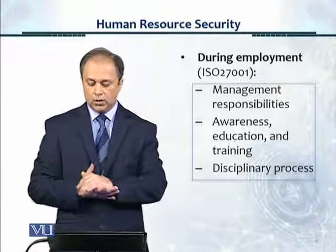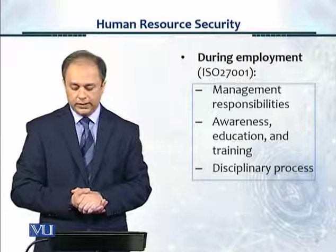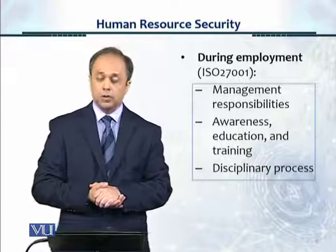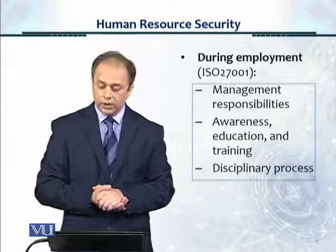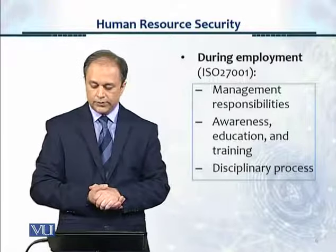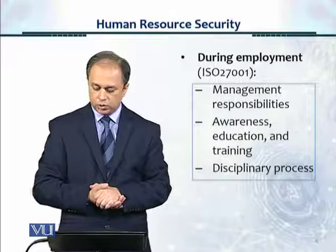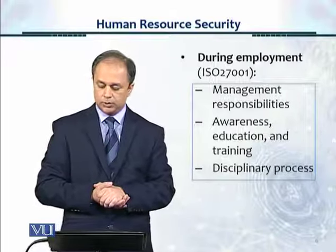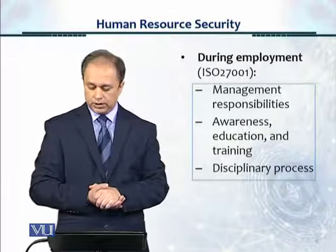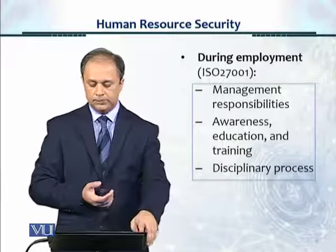The second control objective in 27001 is during employment. For that, we have three different controls: management responsibilities, awareness, education and training, and disciplinary process.